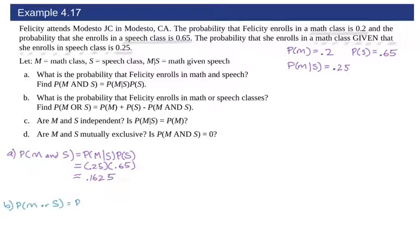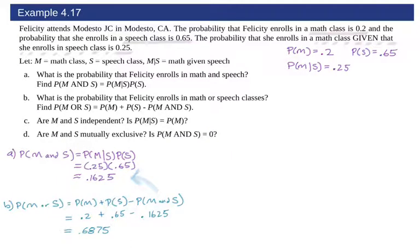For part B, once again they're giving us the formula to use and we're going to plug everything in. We know probability of M is 0.2, probability of S is 0.65, and then probability of M and S we just figured out — that's 0.1625. Plugging it in and getting our calculations gives us 0.6875.